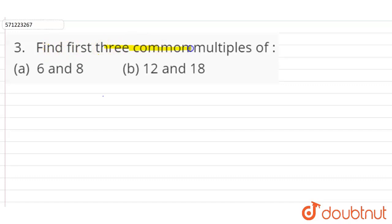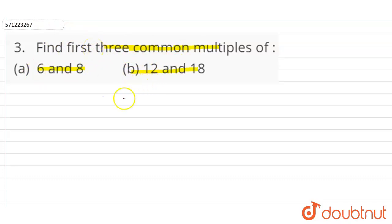Hi students, the question is: find the first three common multiples of 6 and 8, and 12 and 18. To find the first three common multiples of 6 and 8, write all the multiples of 6 and all the multiples of 8 until we get the first three common multiples.